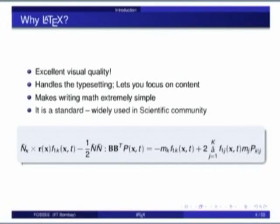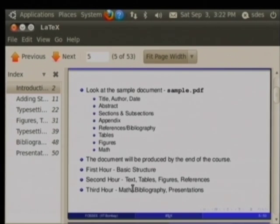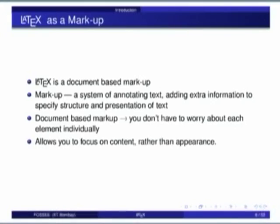Suppose you take a look at the slide — there is a long formula. If I were to type this in MS Office, it would take a lot of time using some math tool. But in LaTeX, if you know it, you can use it very easily. Suppose I have a document where I want to write a title, author, date, then abstract, sections, appendix, references, tables, and figures. We will see how to write a basic document in LaTeX and how to use that LaTeX file to generate a PDF.